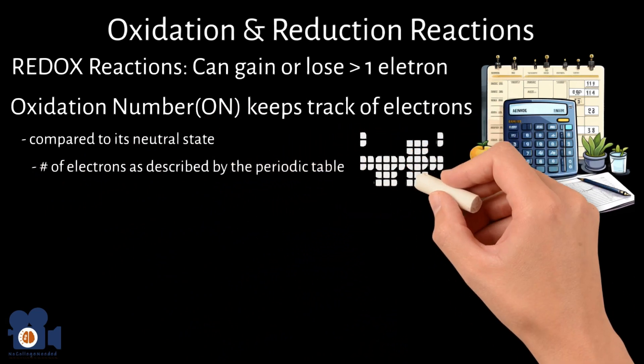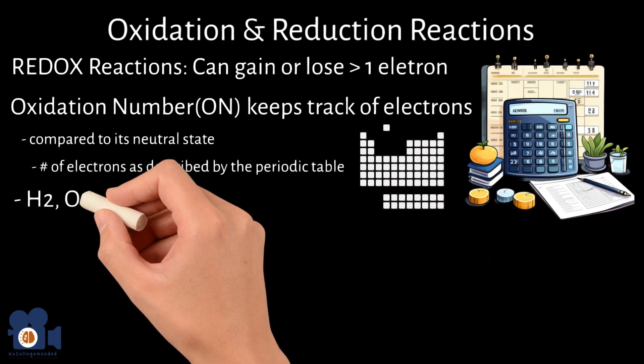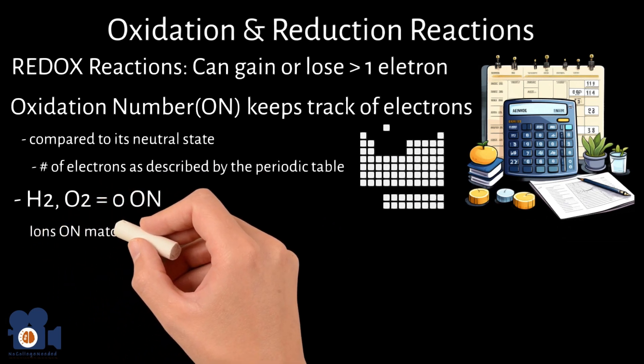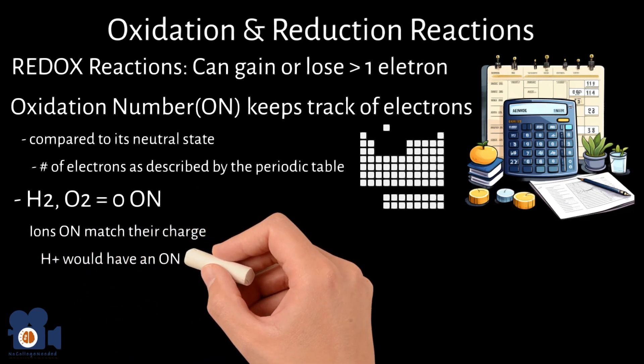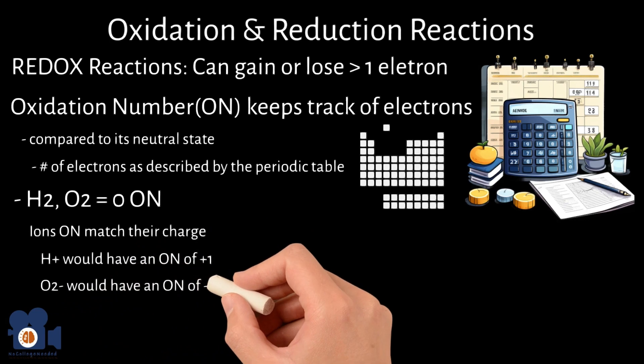For example, if we were able to isolate pure hydrogen H2 or oxygen O2, its oxidation number would be zero. However, once these elements turn into ions, the oxidation number matches their charge. H plus would have an oxidation number of one, and O2 minus would have an oxidation number of minus two.